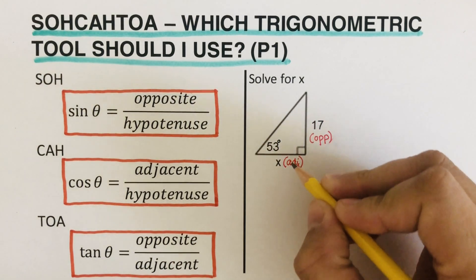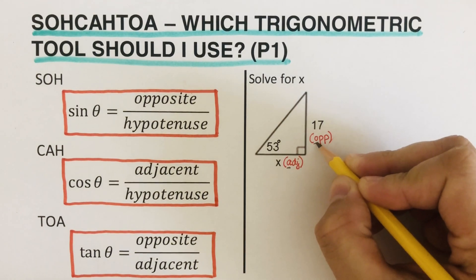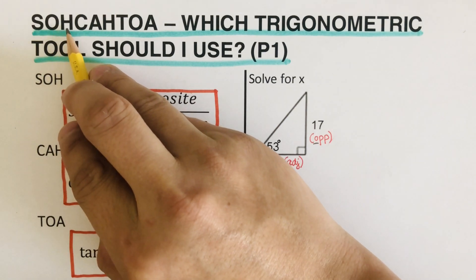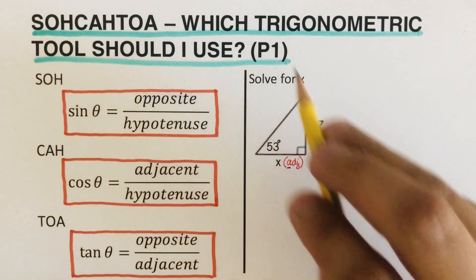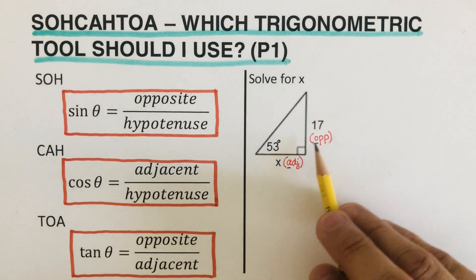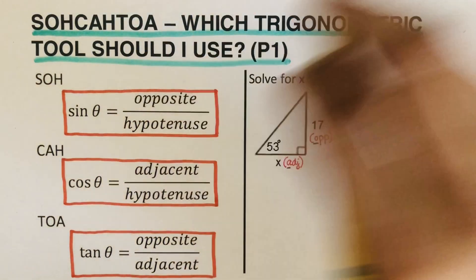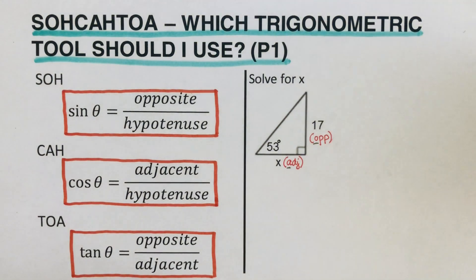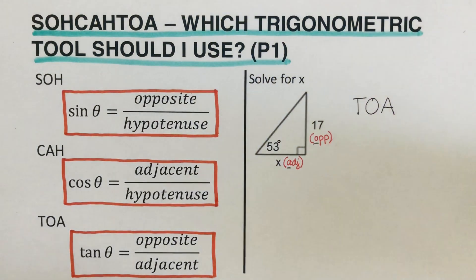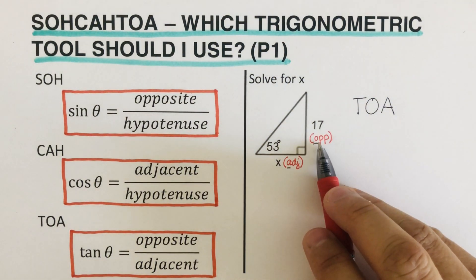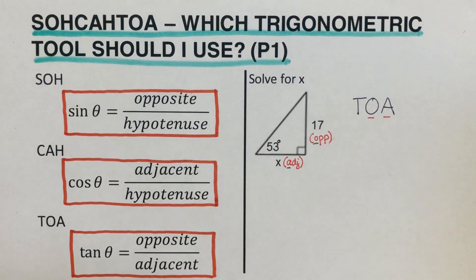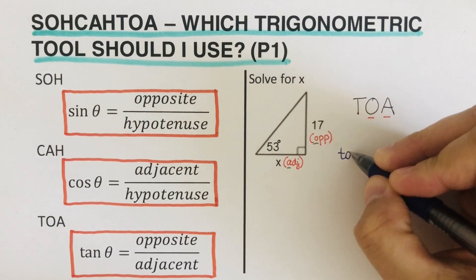We have an adjacent and an opposite. Going back to our ratios — SOH uses opposite and hypotenuse, which doesn't work. CAH uses adjacent and hypotenuse, but we have adjacent and opposite. So we go to the third one. The one we're going to use here is TOA, because we have opposite and adjacent.